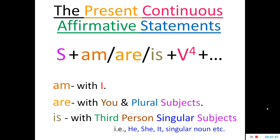Additionally, you can use other words like objects, adjectives, adverbs, etc. But our basic formula is Subject + am or are or is + V4. Now let us understand this formula further with some examples.